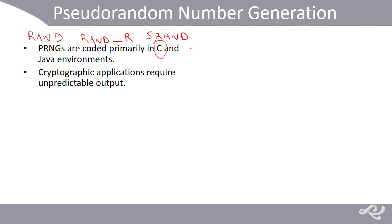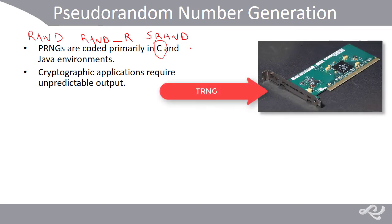Cryptography applications require that random output used to generate keys is not easily guessed or predictable. This means using more elaborate algorithms. It might also mean using a TRNG — a True Random Number Generator — which could be implemented as an add-on computer card or other hardware-based implementation. But for the purposes of this sub-lesson, we'll focus on software-developed PRNGs with no hardware assistance.